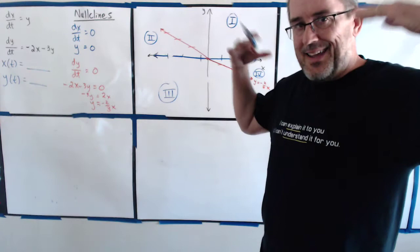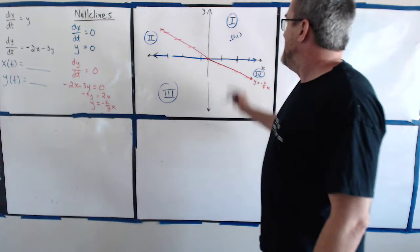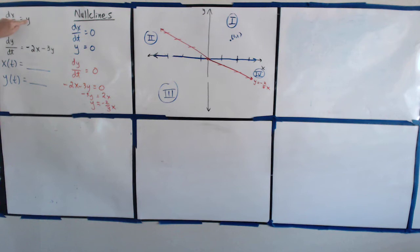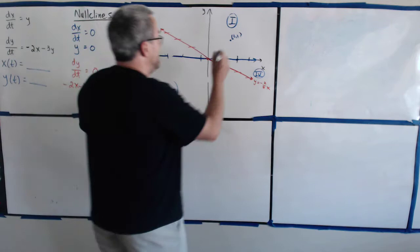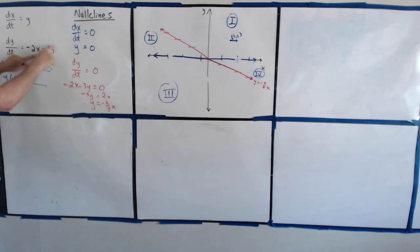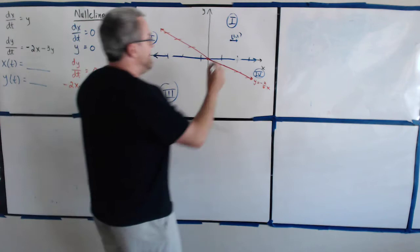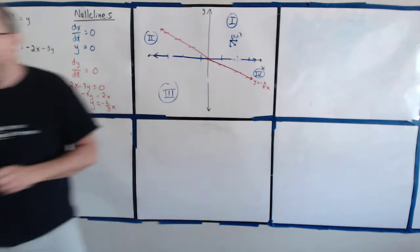Let's look at region one. I'm going to choose the point (1, 1) in region one. dx/dt equals y. If y is one, dx/dt equals one — dx/dt is positive, meaning x is increasing. Now, if x is one and y is one, dy/dt equals negative two minus three, which is negative five — dy/dt is negative, so y is decreasing. The overall trajectory, with a little increase in x and decrease in y, goes down and to the right.